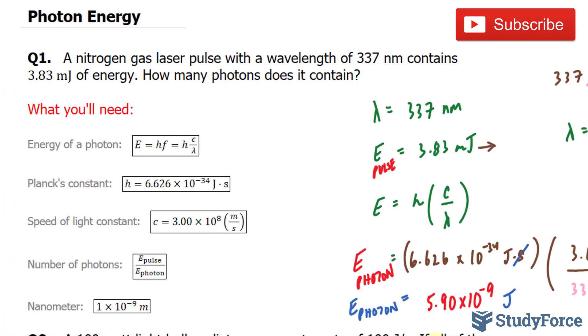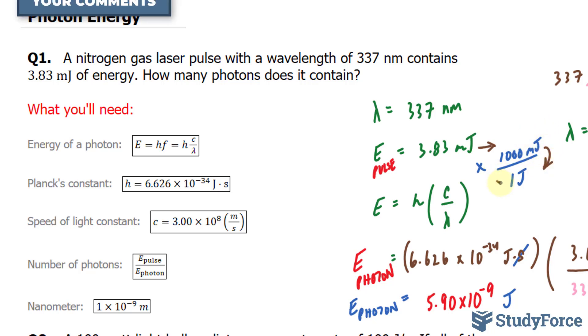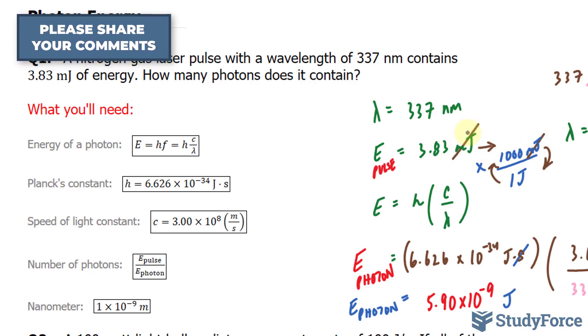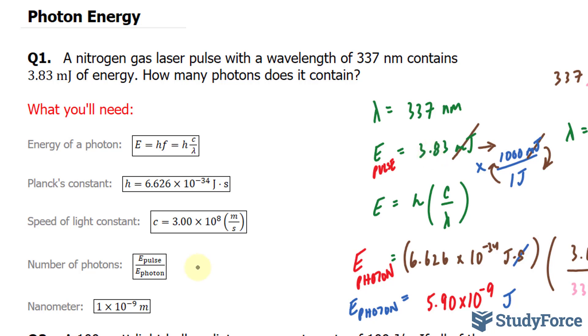Now, to find out how many photons it contains in total, we'll use the following formula where we take the ratio of the pulse relative to an individual photon. So this needs to be converted into joules. And we can do that by multiplying it by, remember, that 1 joule is equal to 1,000 millijoules. So we flip this conversion factor. This millijoules and this millijoules will cancel out. And we'll divide this by 1,000. This gives us 0.00383 divided by the number we found here. Remember, this is in joules and so is this number.